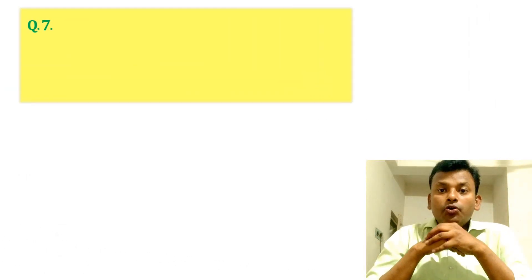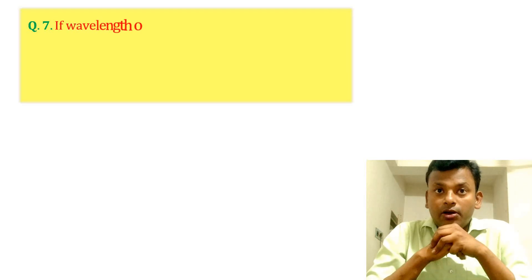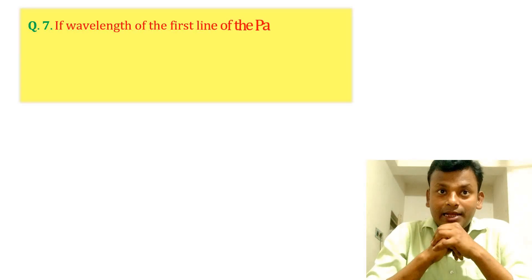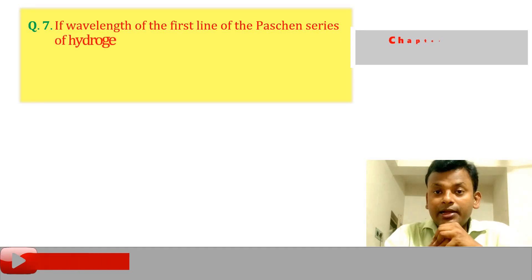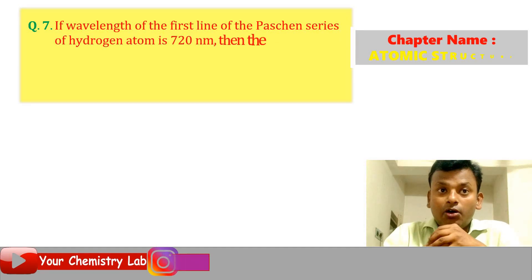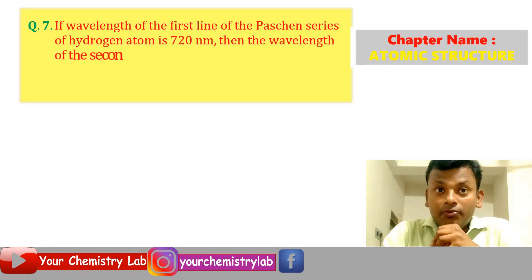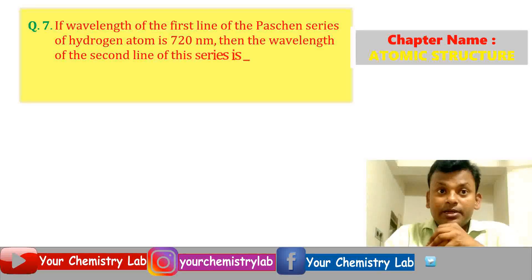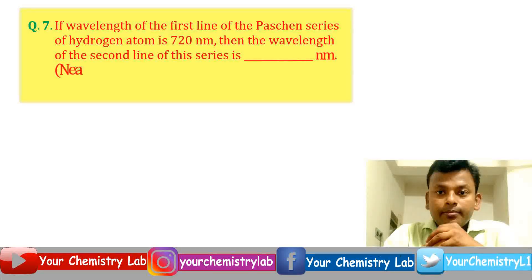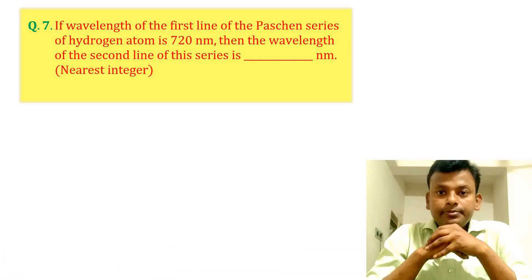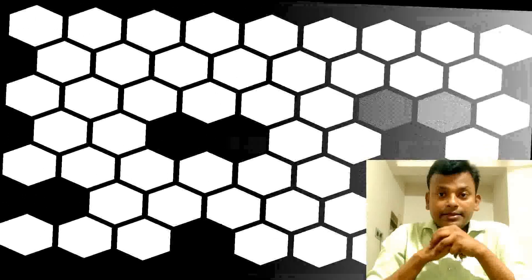Question 7: If wavelength of the first line of Paschen series of hydrogen atom is 720 nanometer, then wavelength of the second line of this series is dash nanometer.